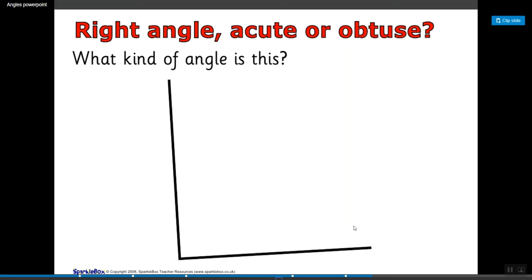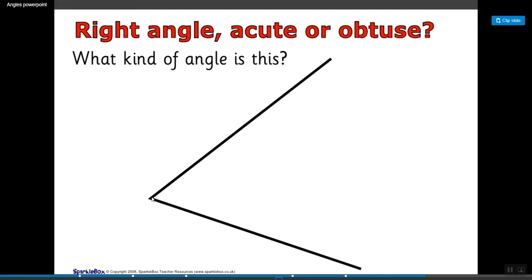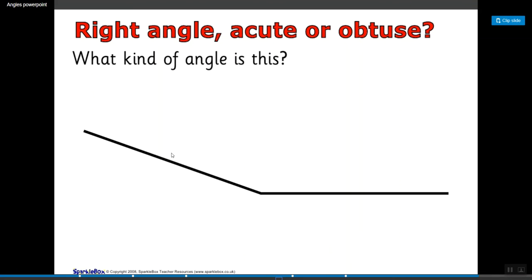Here makes an L shape, it must be a right angle because you could put a square in between. This one's smaller than that L shape so it must be acute. This one's really big and open, big open mouth, it's bigger than a right angle so it must be obtuse.